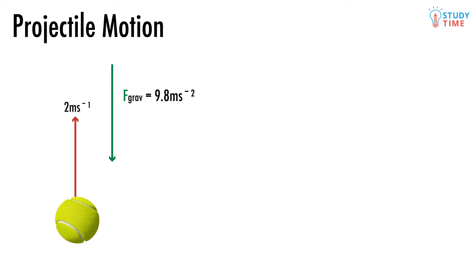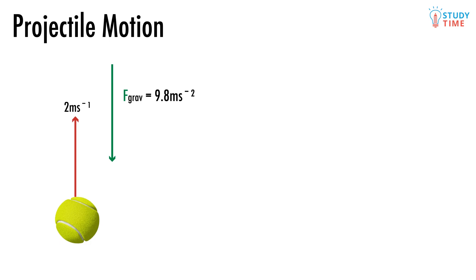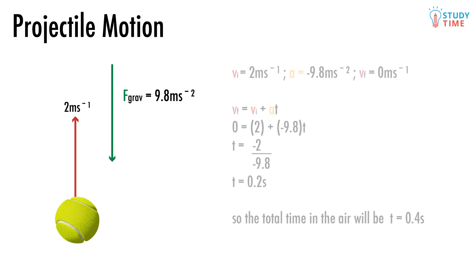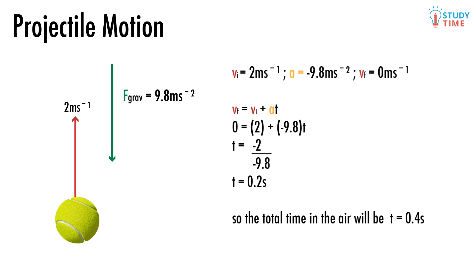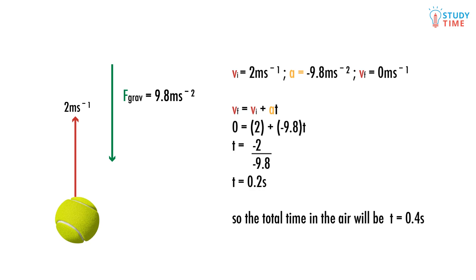We get to ignore the horizontal motion of the ball — the only thing we care about is the vertical part. The initial velocity of the ball upwards is 2 meters per second. Just at the moment the ball reaches the top of its height, the final velocity will be zero. Since velocity is initially upwards (positive) and ends up downwards (negative), there must be a point when it's at zero — this occurs at the peak of the flight. There's a constant acceleration of -9.8 meters per second per second because of gravity. Using the kinematics equation vf = vi + at, we solve for t and get 0.2 seconds to reach the peak. We double this to get the overall time in the air: 0.4 seconds.